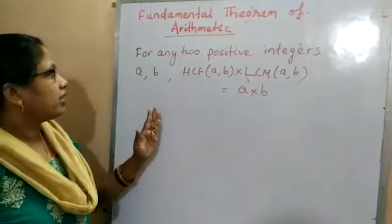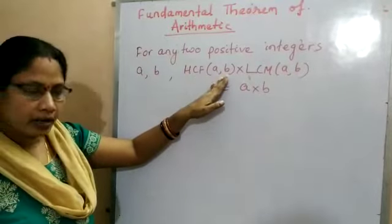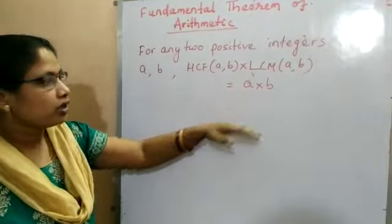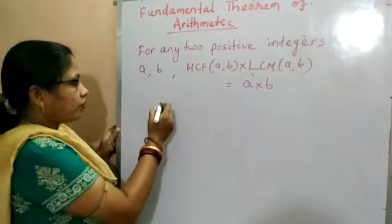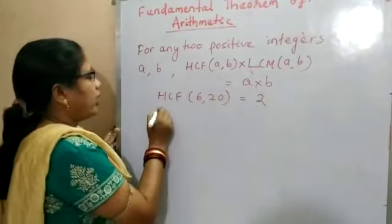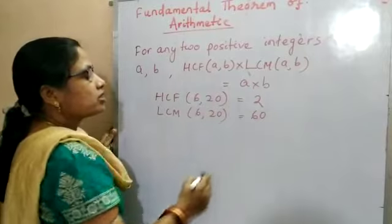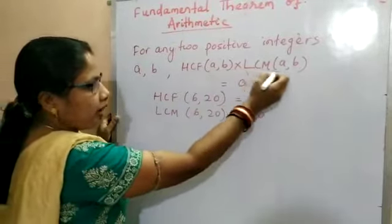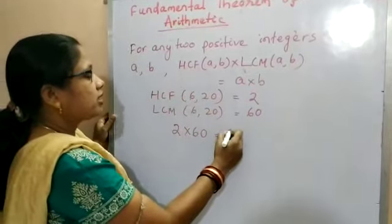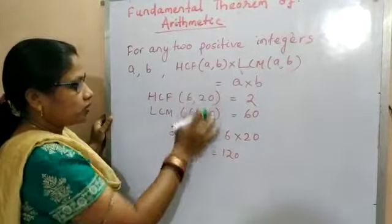Another rule: for any two positive integers A and B, HCF of A and B multiplied with LCM of A and B equals the product of A and B. In our previous example, HCF of 6 and 20 is 2 and LCM of 6 and 20 is 60. So HCF × LCM = 2 × 60 = 120, and 6 × 20 = 120. Thus 120 = 120, and this rule is verified.